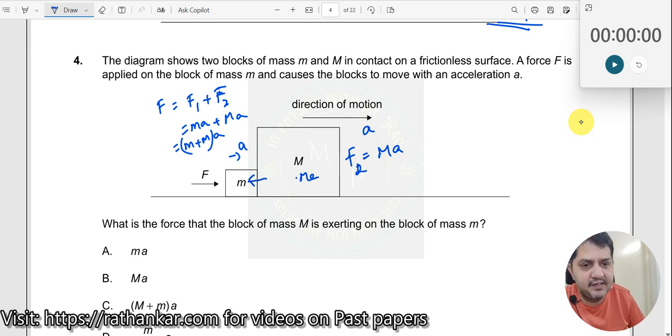So therefore, M into A is the right answer. Capital M into A is the right answer. Which is the right answer here? Answer B.